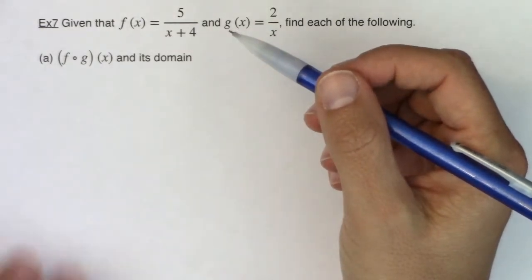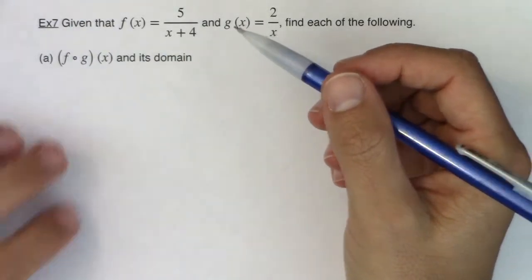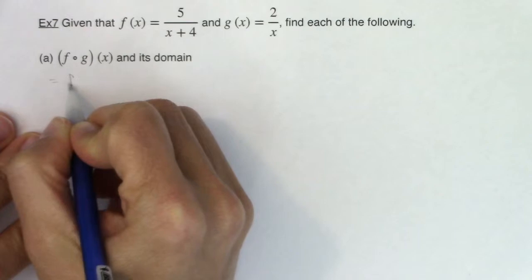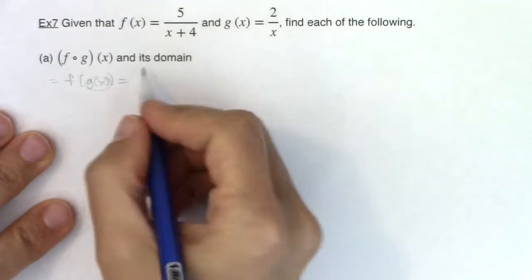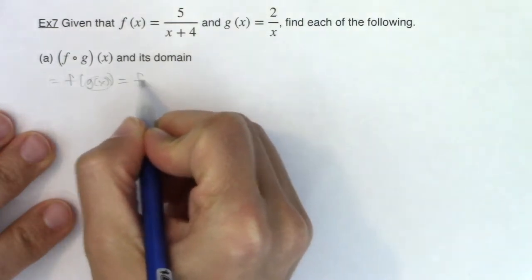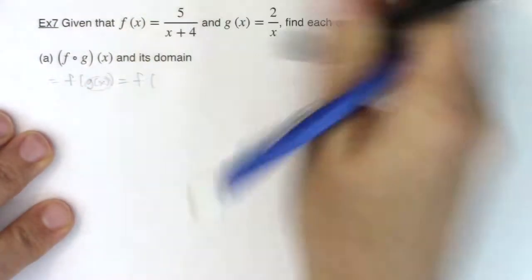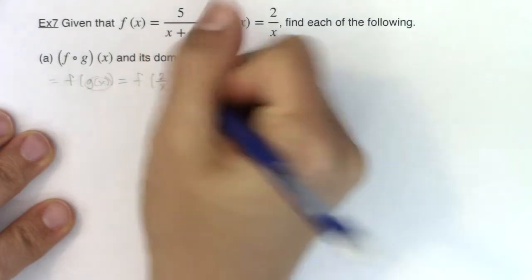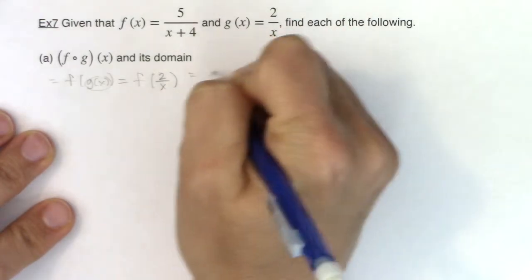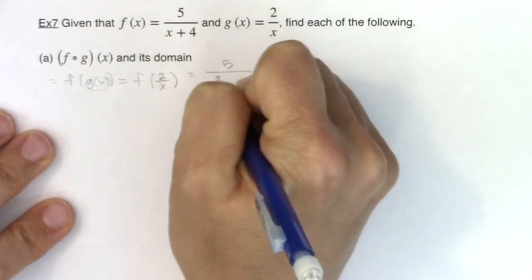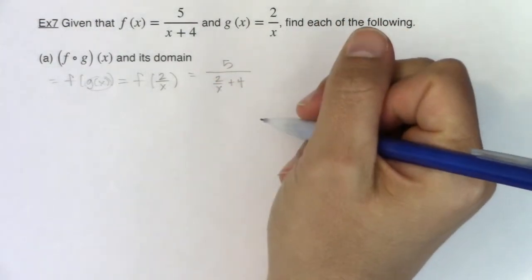So the first thing I'm going to do is compose the functions and then we'll have a chat about the domains. Let's try this one. We need to do f of g of x, so I need to start with my innermost function which is 2 over x. So I have f of 2 over x. And with that, now my 2 over x becomes my input into the f function, so this is 5 and then we have 2 over x plus 4.